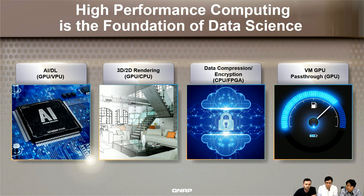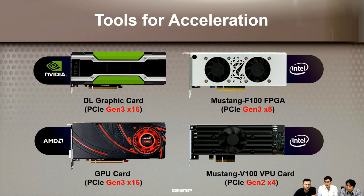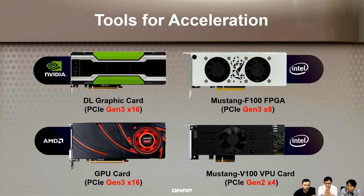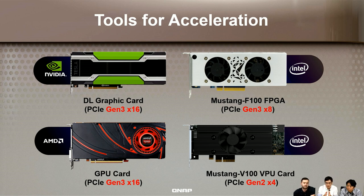That's the reason we created the 2888X — it delivers a lot of computing power. There are a lot of tools to help with acceleration, like GPU, VPU, or FPGA cards — those kinds of PCI adapters. Sometimes the CPU cannot handle all the tasks, so you need these tools. High-speed PCI adapters require higher bandwidth in the PCI bus, and some support multiple PCI adapters to improve performance — two or three times more compared with a single adapter.